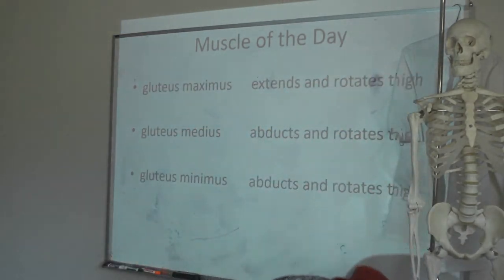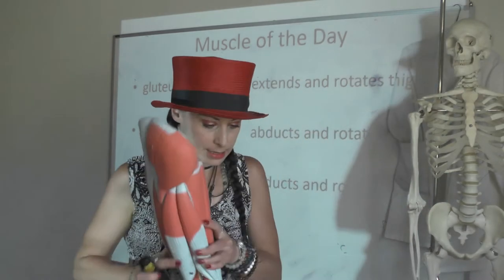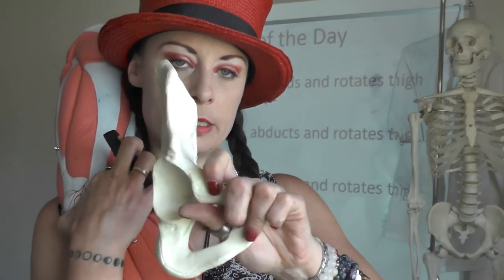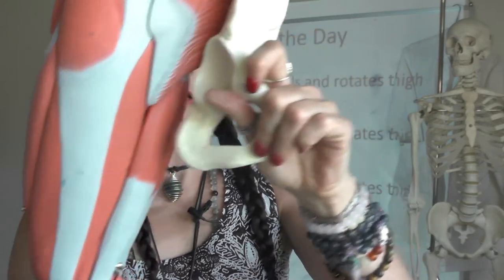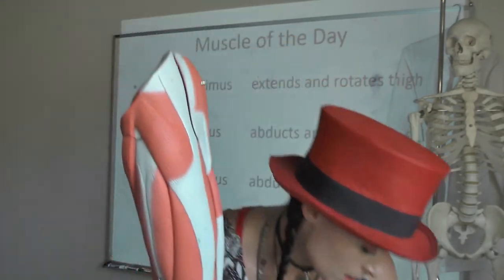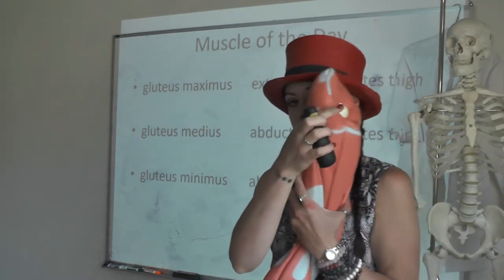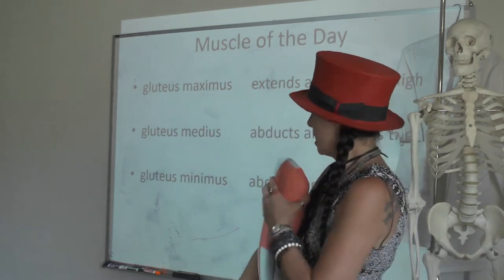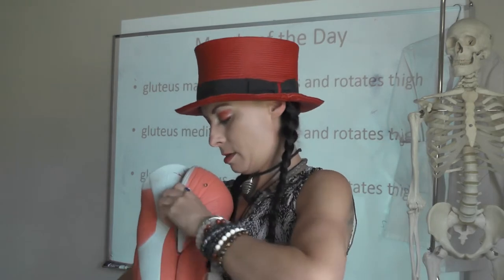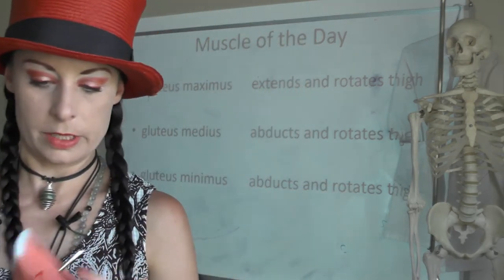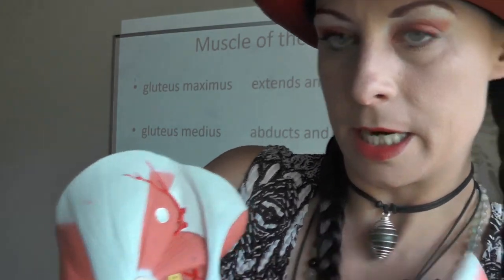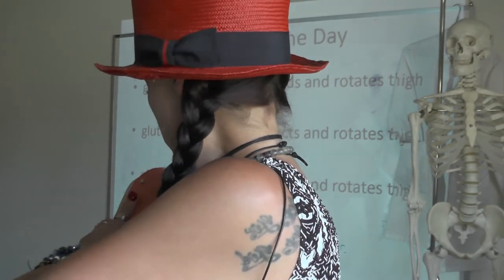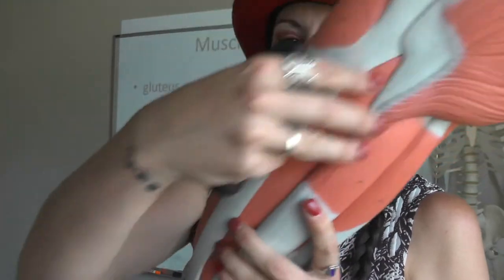Muscle of the day — let's talk about some things moving that thigh. Your oscoxa has a whole bunch of big muscles on the back of it. Gluteus maximus is this big one. Gluteus medius is deep to that, and gluteus minimus is the deepest. They're all hard to identify on models, and they all move the thigh.